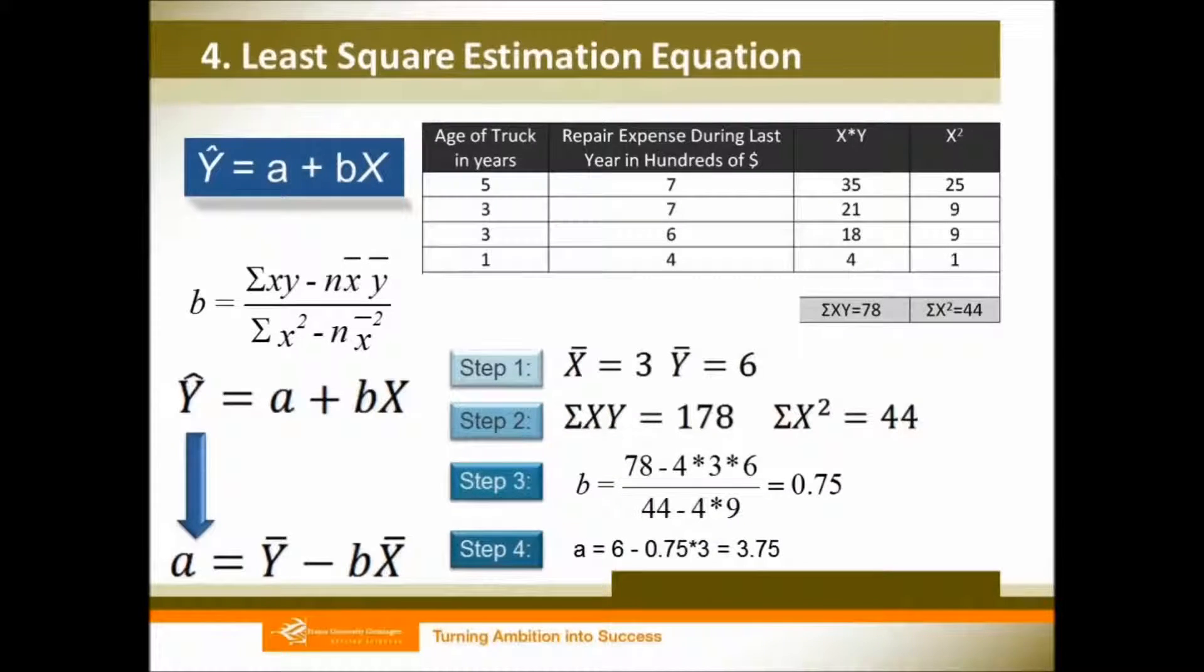Now you know your a (intercept) and you know your b (slope). You can formulate your equation. So your equation will be y hat equals 3.75 plus 0.75 times x.